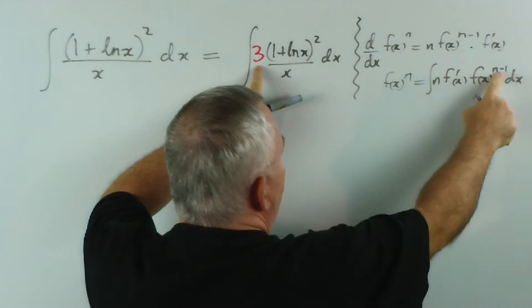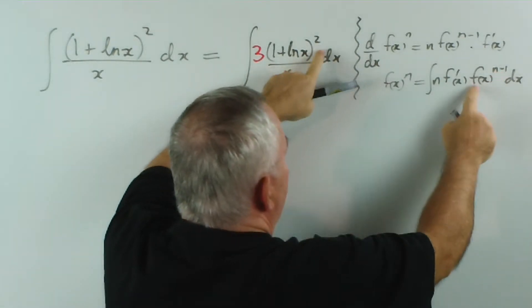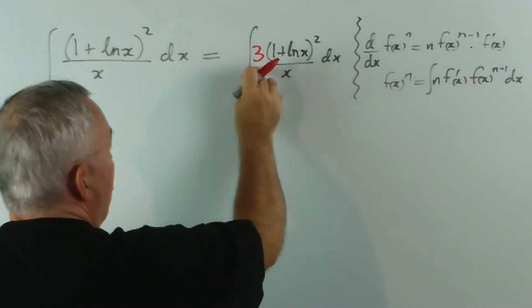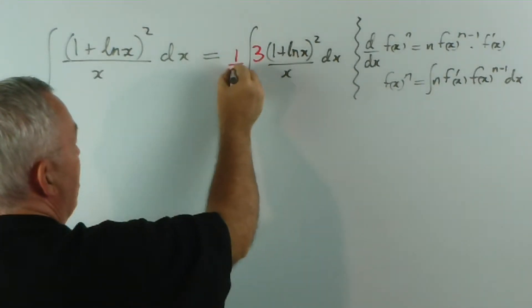That would match the n. n minus one will be two. There's our function, and there's the derivative of our function, being 1 over x. Now, to compensate for the 3, we need to multiply by a third.